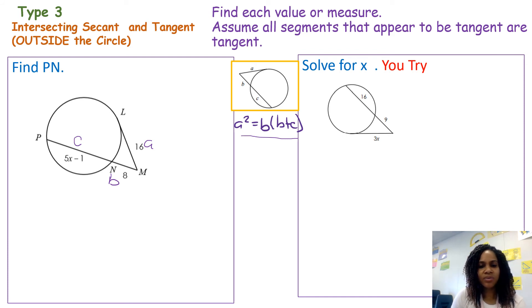I'm just going to use this formula to plug it in. So A squared, A is 16, so 16 squared equals B. My B is 8, B plus C. So B again is 8 plus C is 5x plus 1. I'm going to put everything inside, and then from that point, I'm just going to use algebra skills to solve. 16 squared is 256. Simplifying what's on the inside of the parentheses, that would be 5x, 8 minus 1 is 7, so plus 7.